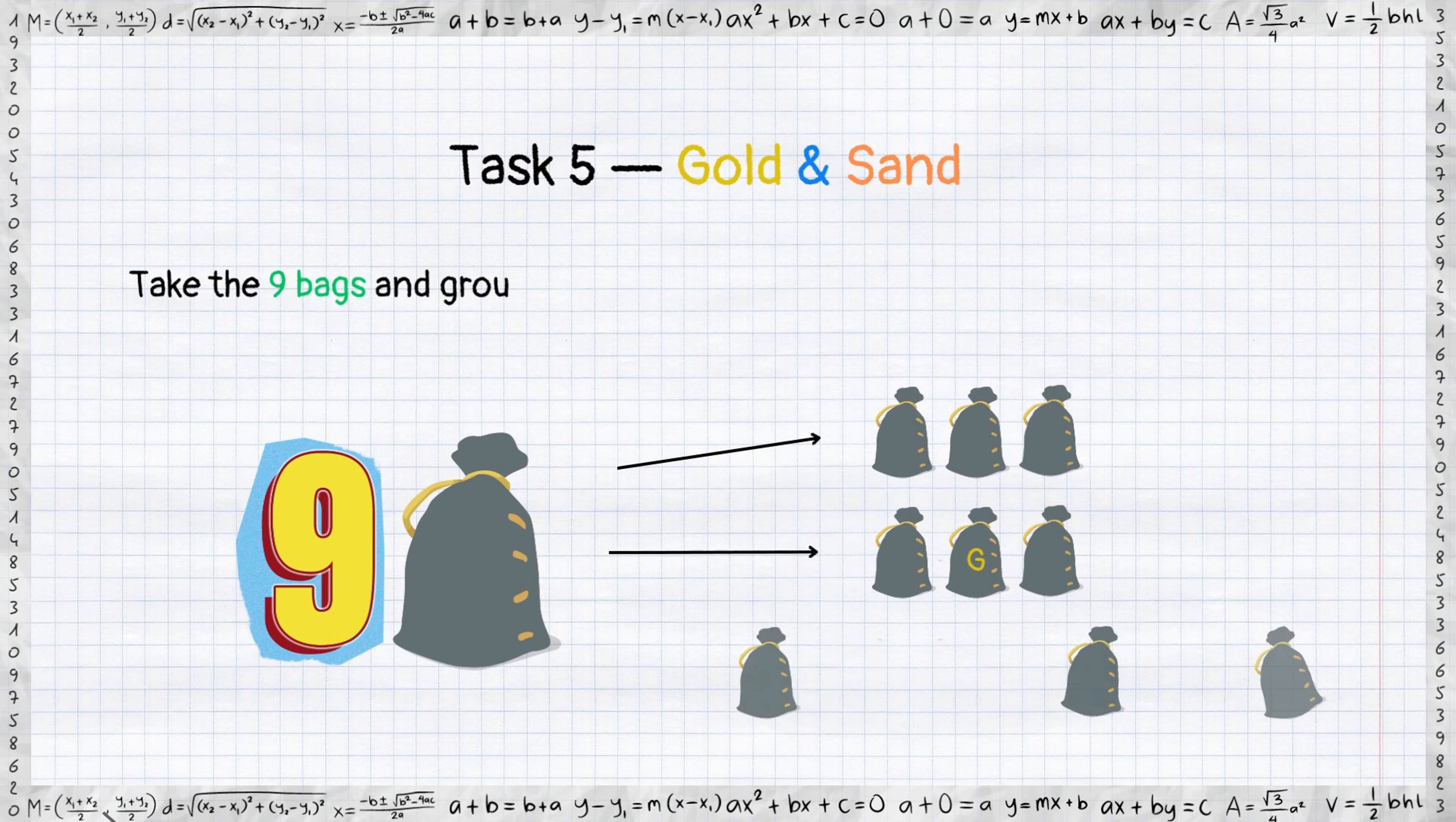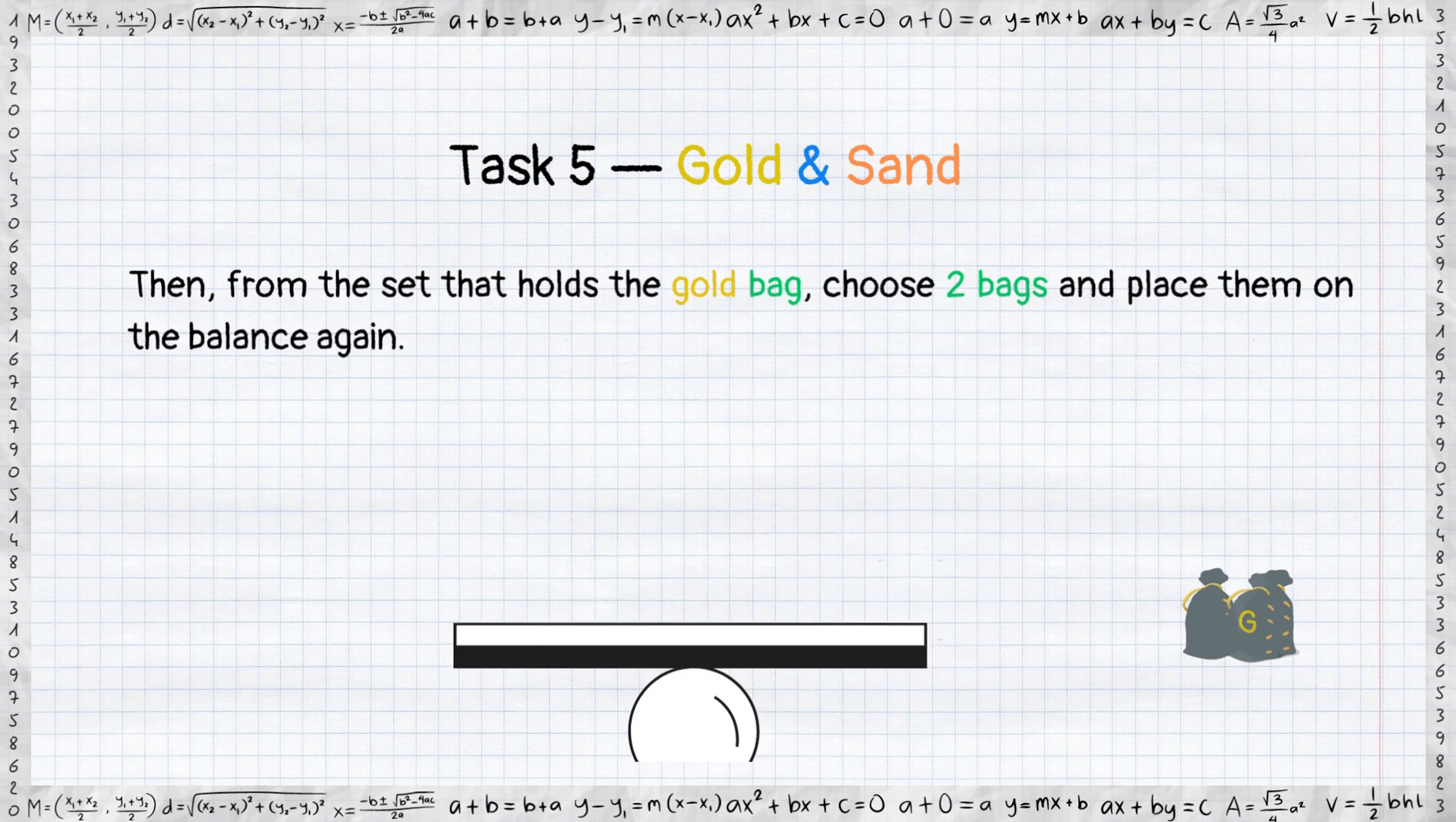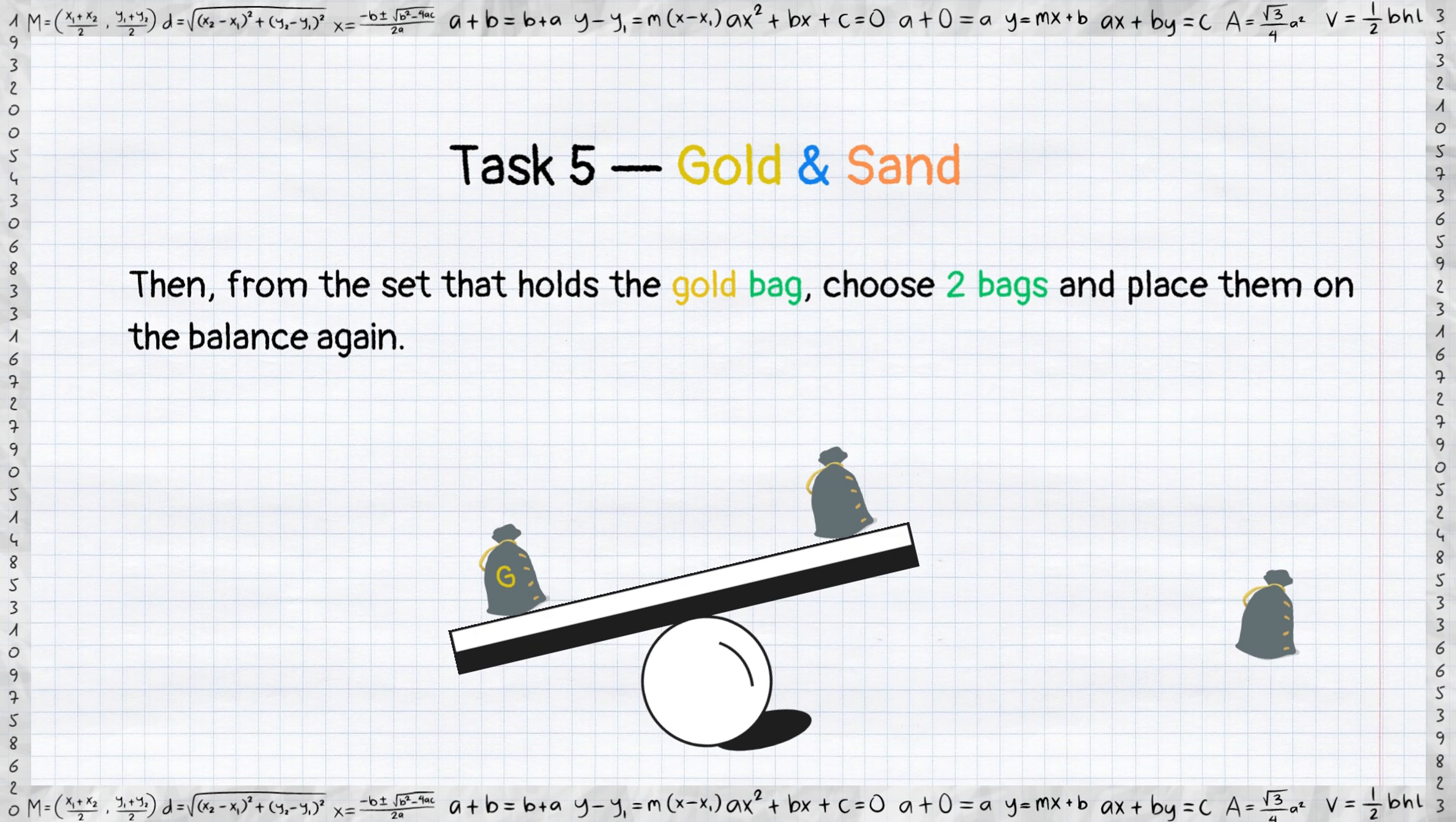Take the 9 bags and group them into 3 sets of 3 bags each. Compare the weight of 2 of these sets to figure out which set has the gold bag. Then, from the set that holds the gold bag, choose 2 bags and place them on the balance again. It will exactly tell you where the gold is.